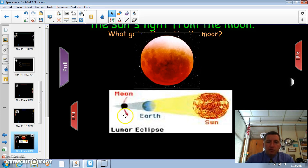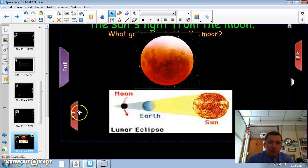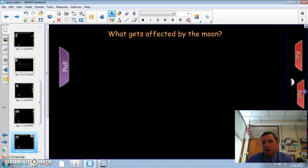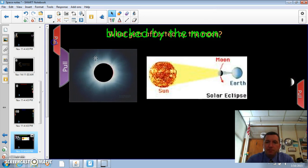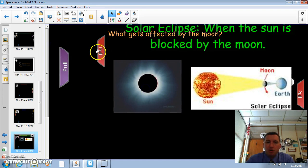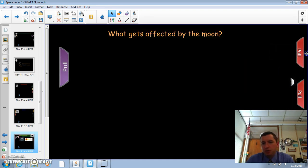So a lunar eclipse is where the moon is being eclipsed, or blocked. So the moon's being blocked by the earth. And your other eclipse, going back to solar. Solar eclipse, the sun's rays are getting blocked by the moon. Solar, sun. Lunar, moon.